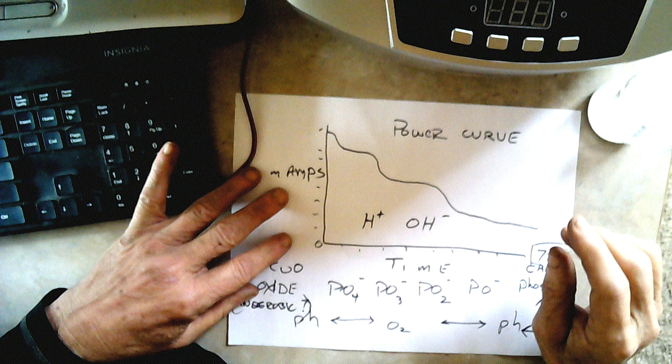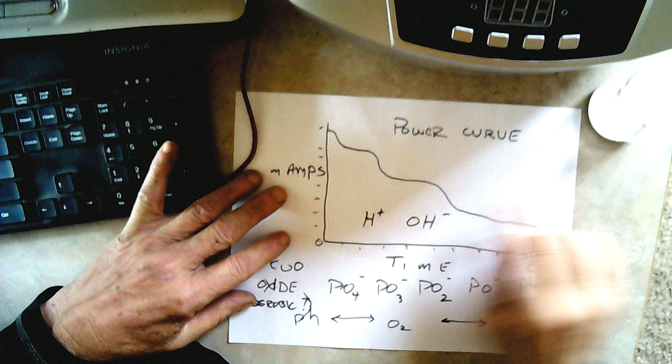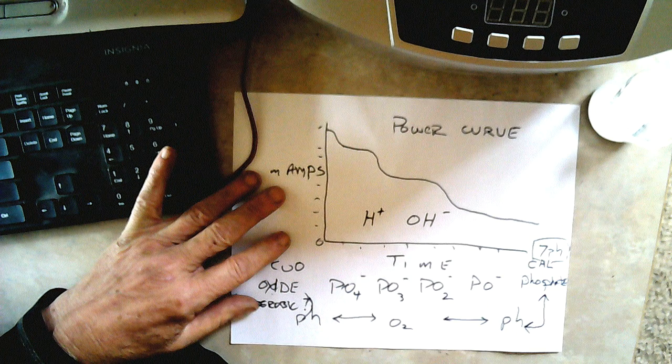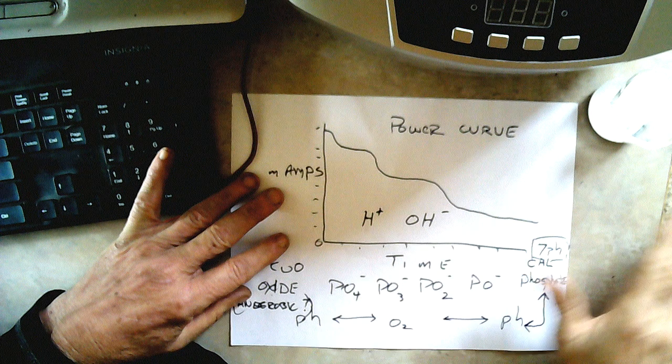What I noticed was a power curve that looks something like this. The cell wants to drop down and hold a voltage, and then it'll drop down and hold again.